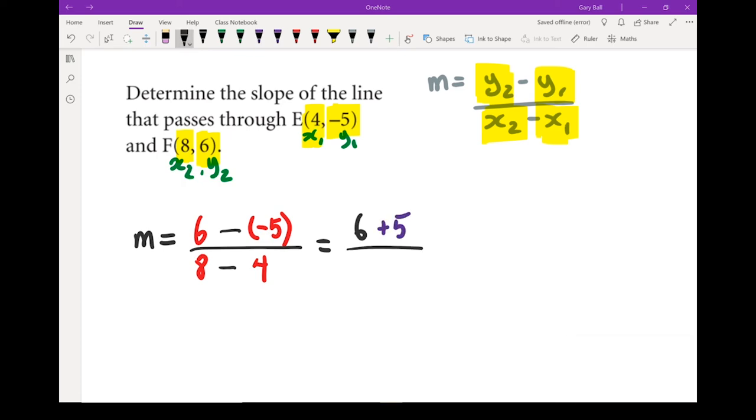On the bottom, I've got 8 minus 4. I'm just going to leave those alone for now and do them all in one step. 6 plus 5 gives me 11, 8 minus 4 gives me 4. Here I've got a slope of 11/4. Be very careful to get those signs correct.